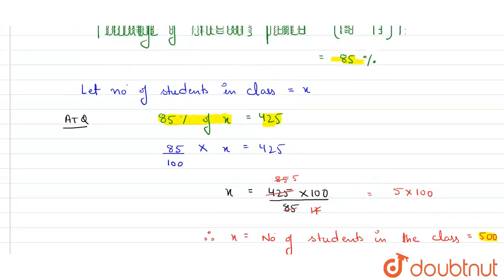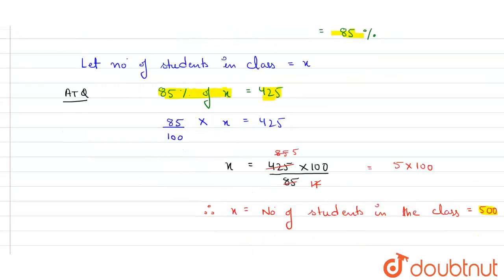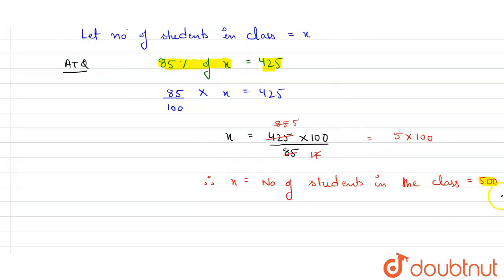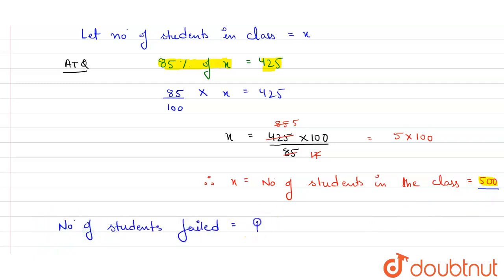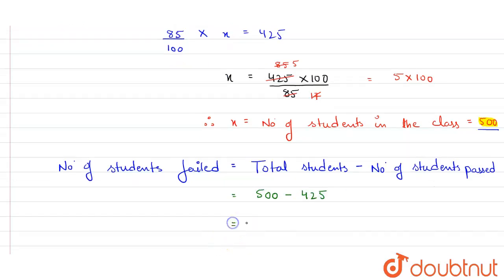Now we have to find the number of students who failed the exam. We found that there are 500 students in the class, and out of 500, it was given that 425 students passed. So the number of students who failed equals total students minus students who passed, which is 500 minus 425.